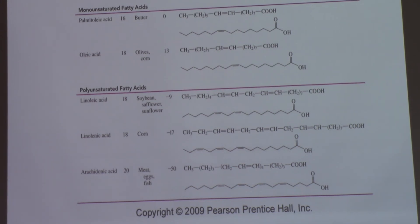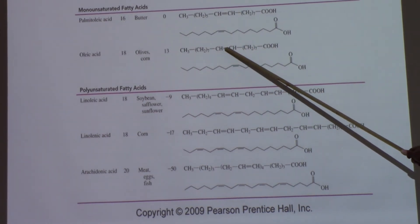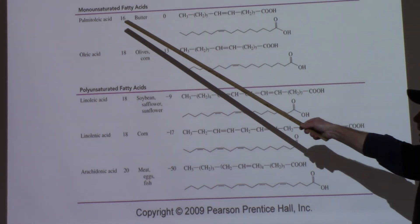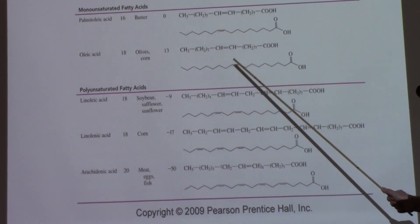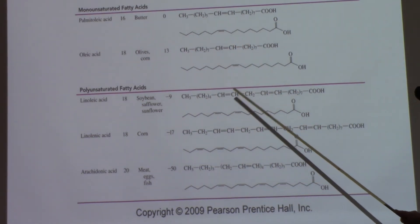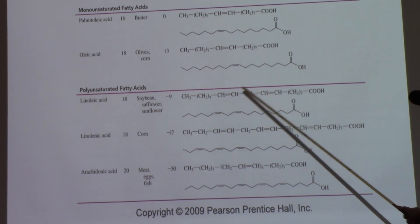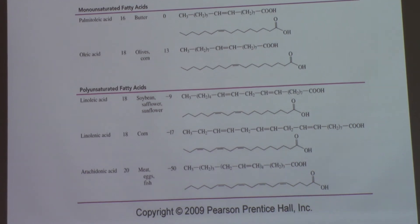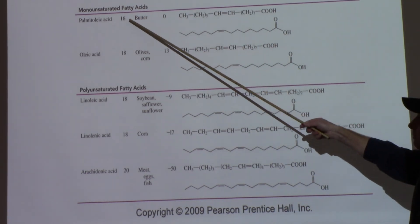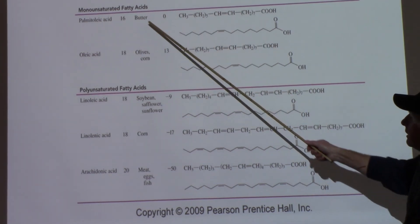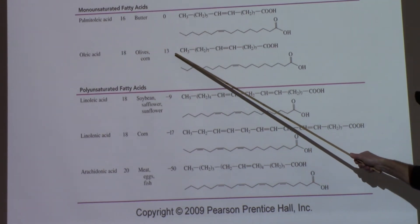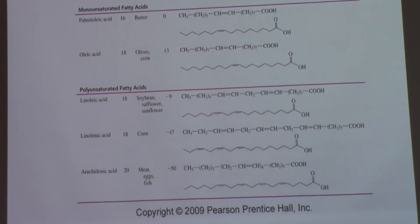Now let's look at unsaturated fats. You'll notice these have at least one double bond between the carbons. The monounsaturated group has only one double bond, while the polyunsaturated group has at least two — some have two, three, or four double bonds. Even among unsaturated fats, a longer chain still gives a higher melting point due to the tangling effect.